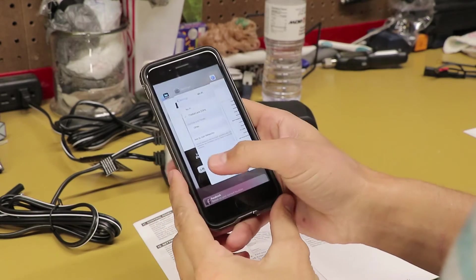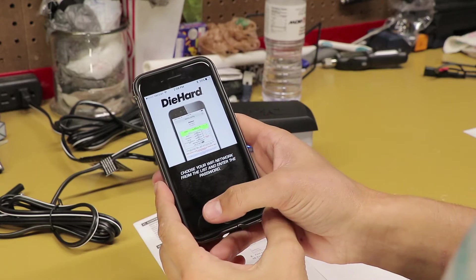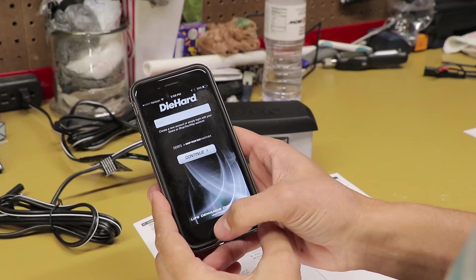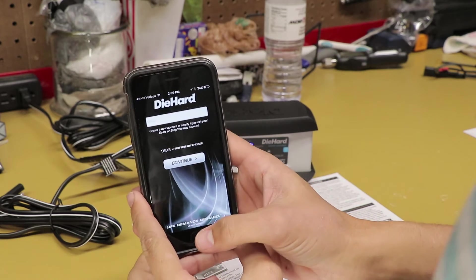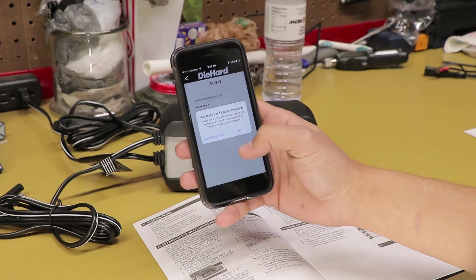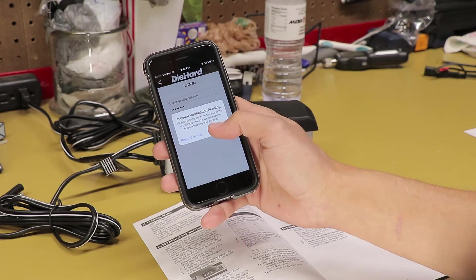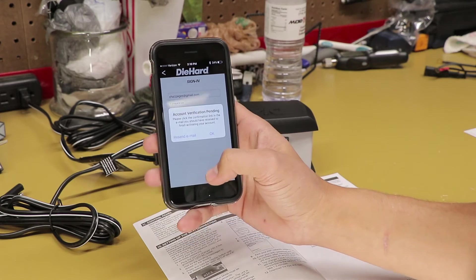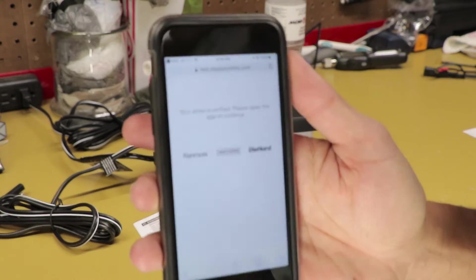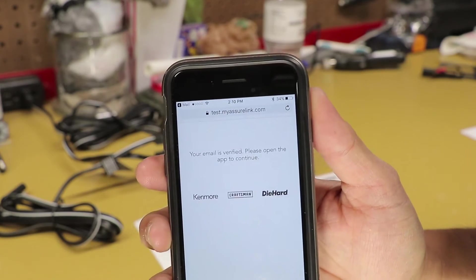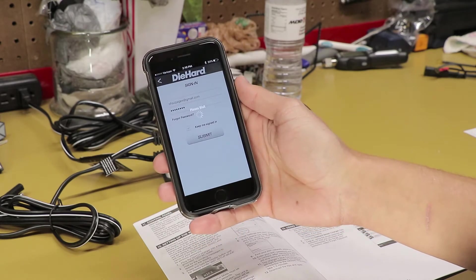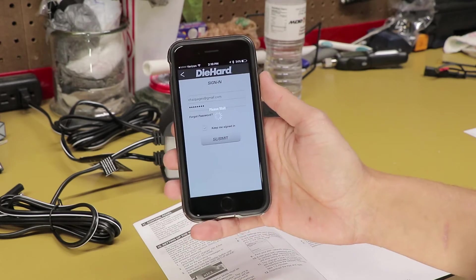So now that that's done, you can switch back over to your app here, entered everything in. Now you do need to set up a Sears account. So if you don't have one, set it up. So after you go through and log in, I already had an account, so I logged in. It does say that there's an account verification, so they'll send you an email. So after that, check your inbox for that. So once you do that, you'll get a thing that says your email is verified. So now I'm going to switch back over to the app and log in and let's see what happens here.